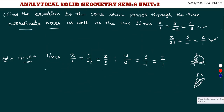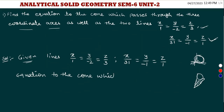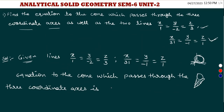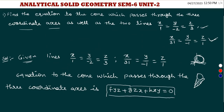The equation of the cone which passes through the 3 coordinate axes — as we derived in the last class — is: fyz + gzx + hxy = 0. This is the required general equation of the cone.